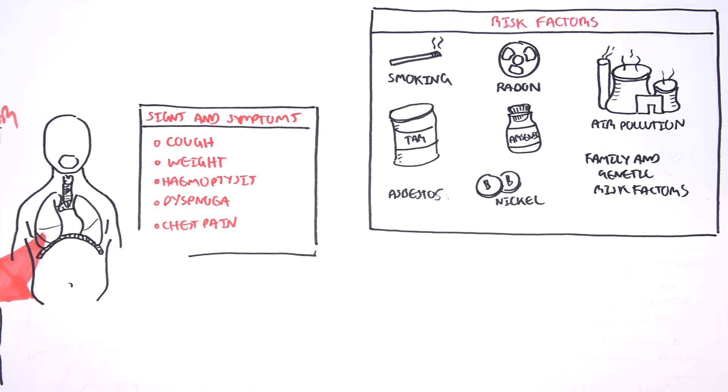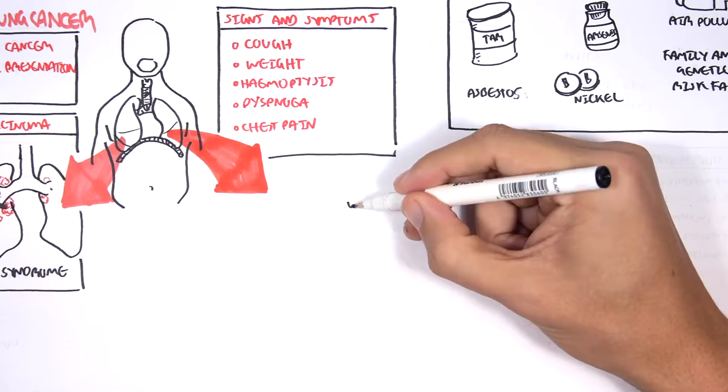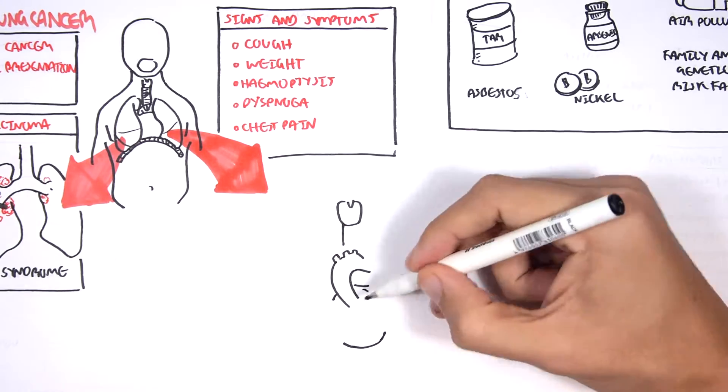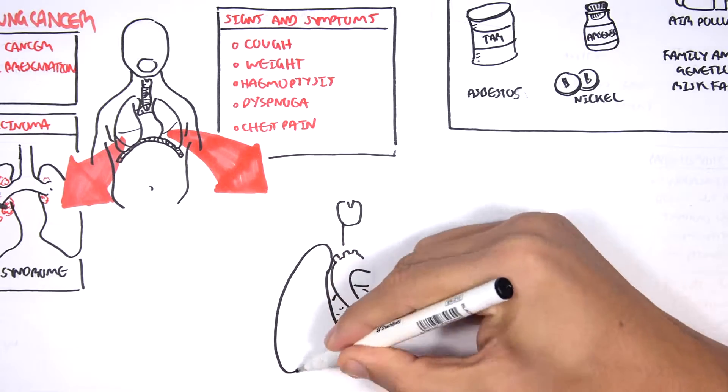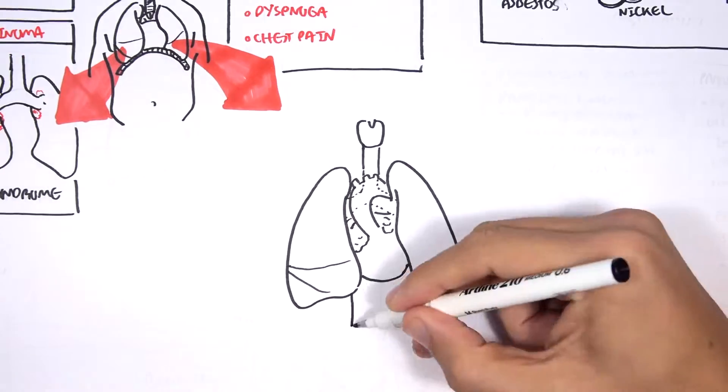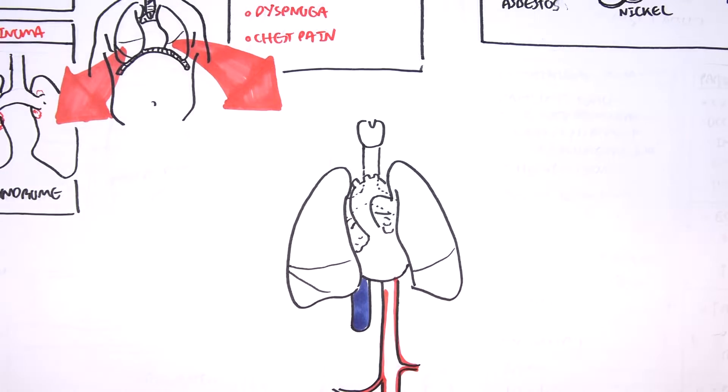Now, with cancer, because it is a growth, it can cause some problems to surrounding tissues, surrounding organs. So let us look at some mediastinal involvement of lung cancer. Let us zoom into the mediastinum where we can find the heart, the lungs, and all these other structures, including the ribs.